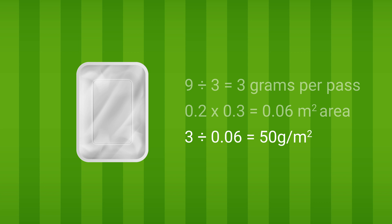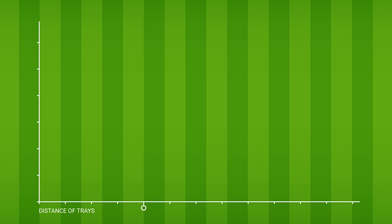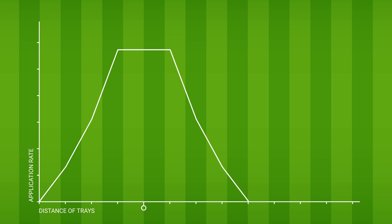Treat each tray in the same way and note your answers down. Now plot a simple graph of the distance of each of the trays both sides from the center of the distributor versus the application rate received in each tray. The graph that you have plotted will often be approximately triangular in shape, indicating that the application rate diminishes with the distance away from the distributor.